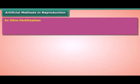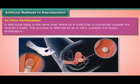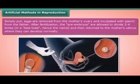Artificial methods of reproduction — in vitro fertilization. A test tube baby is the term that refers to a child conceived outside the woman's body. The process is referred to as in vitro — outside the body — fertilization. Eggs are removed from the mother's ovary and incubated with sperm from the father. After fertilization, the pre-embryos are allowed to divide two to four times in a test tube — hence the name — and then returned to the mother's uterus where they can develop normally.